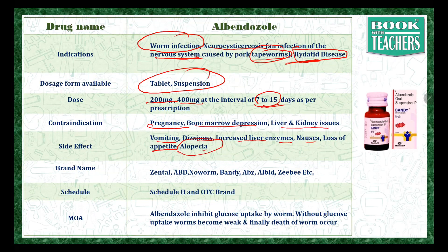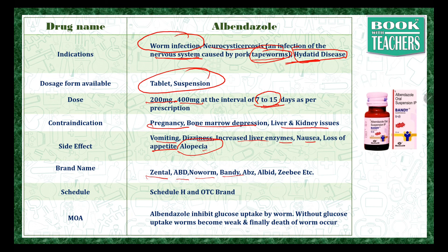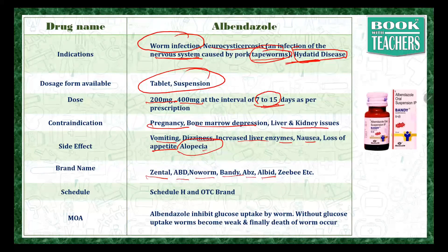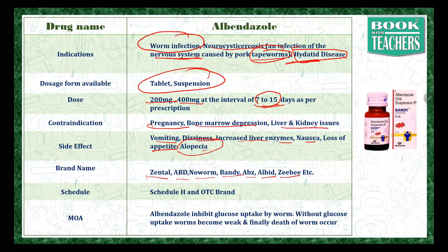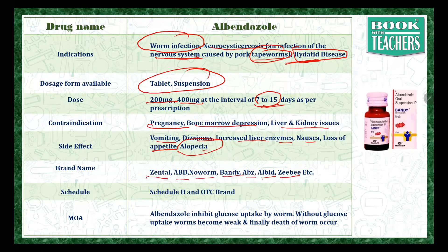The famous marketed brands available with albendazole are Zentil, ABD, Novorm, Bandy, ABZ, Albit, ZB, and others. This is a schedule H drug, but it can also be taken as an OTC brand as well.